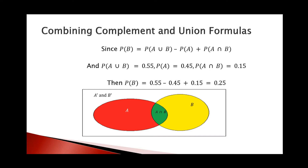We have the formula for P(B), we know P(A) = 0.45, P(A ∩ B) = 0.15, and we derived P(A ∪ B) = 0.55. Substituting into the formula: P(B) = 0.55 - 0.45 + 0.15 = 0.25. That's it for today's slides — thank you very much for listening.